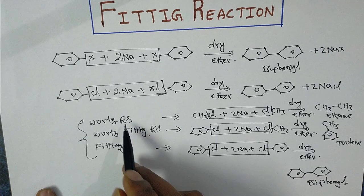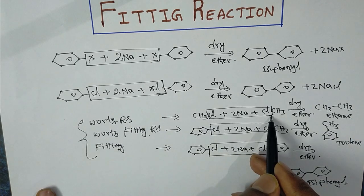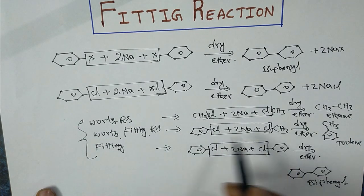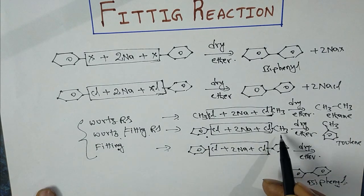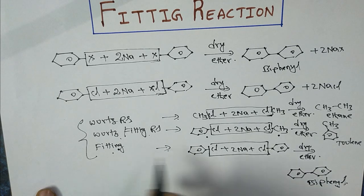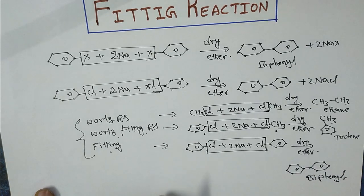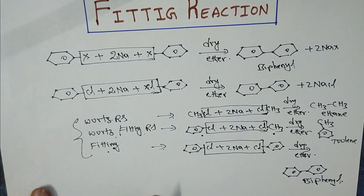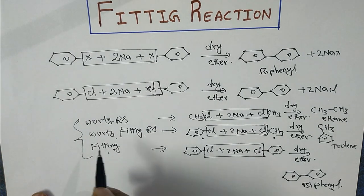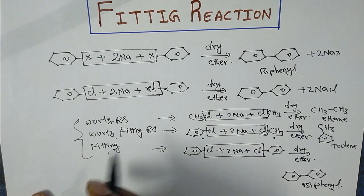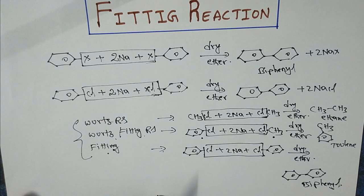In the Wurtz reaction, we take two alkyl halides. In the Wurtz-Fittig reaction, one aryl halide and one alkyl halide. In the Fittig reaction, both are aryl halides. So Wurtz, Wurtz-Fittig, and Fittig — these three reactions are easy to remember.